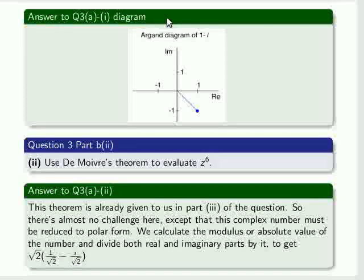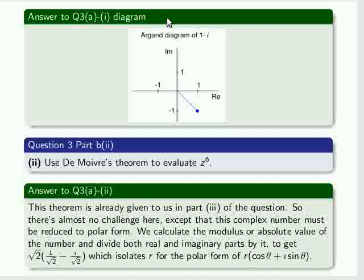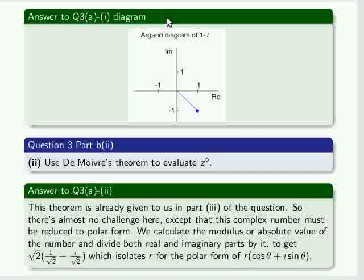to get root 2 all multiplied by (1 over root 2 minus i over root 2). Okay, this isolates r for us from the polar form of r multiplied by (cos θ + i sin θ).